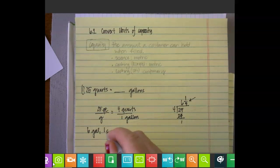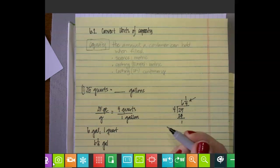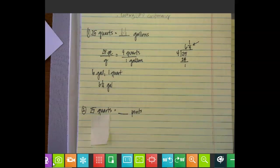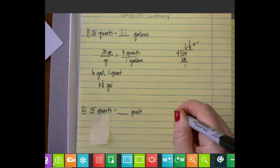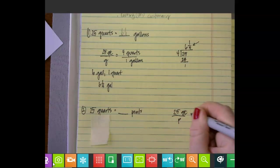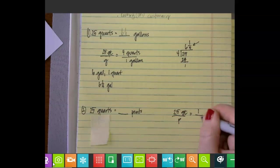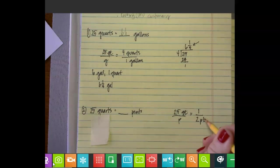Next conversion we'll do is 25 quarts equals how many pints, so again using ratio reasoning. One quart is equivalent to two pints. When we were looking at percentages, you found the pattern where you knew to multiply.